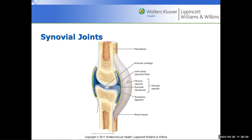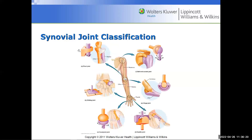An accessory ligament allows support to the joint and prevents it from going out of position. There's a certain amount of flexibility, but it acts like a rubber band, keeping the joint from going too far out and maintaining the integrity of the joint. The periosteum — 'peri' meaning around, 'osteum' referring to bone — is the protective sheath found around the bone matrix.